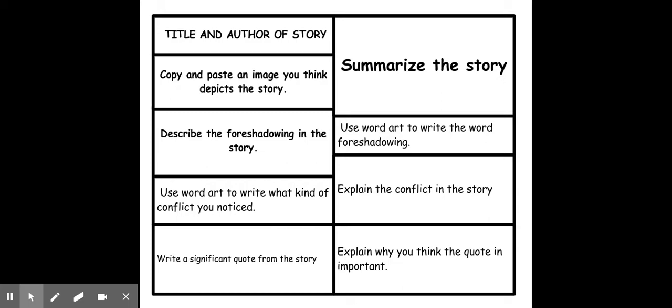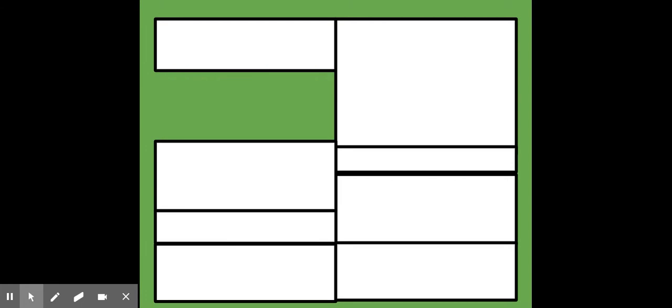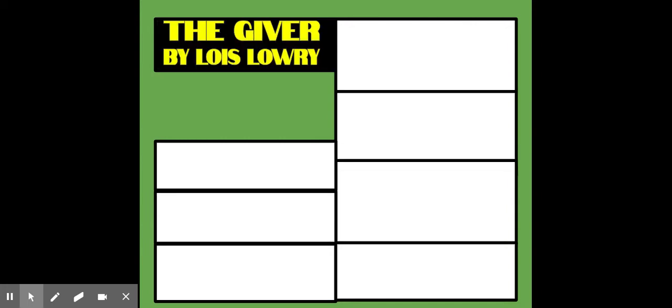Let's go through it step by step. The first thing I did was I created a background color. Then, in the first box, I used a paint bucket to give it color. Then I used word art to write down the title and then the author's name.